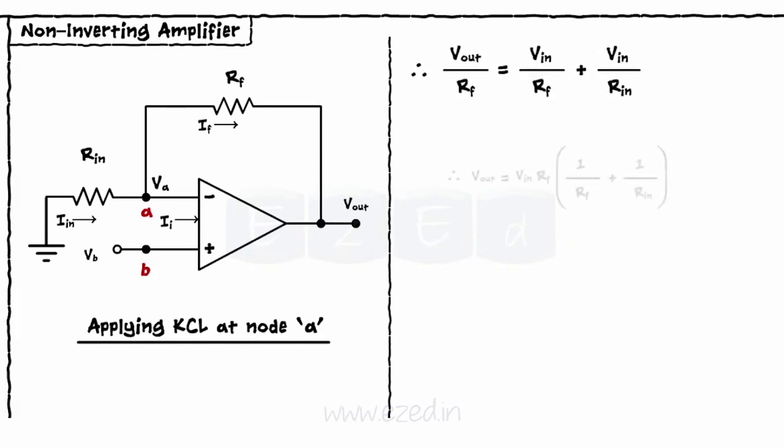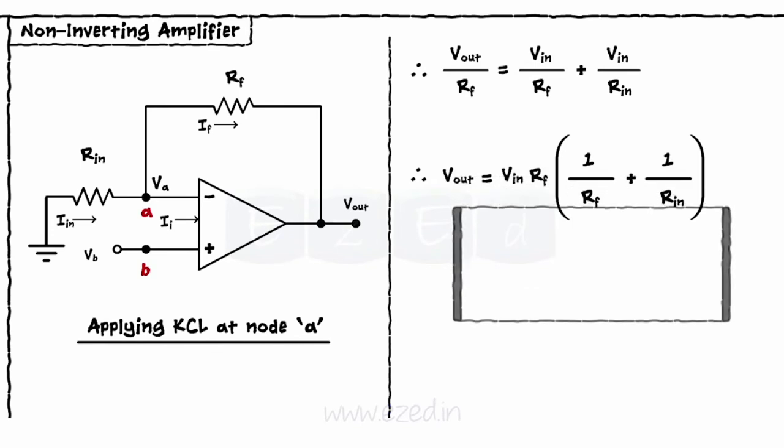Rearranging the equation in terms of v-out, we get a final equation as v-out equal to 1 plus r-f upon r-in into v-in.